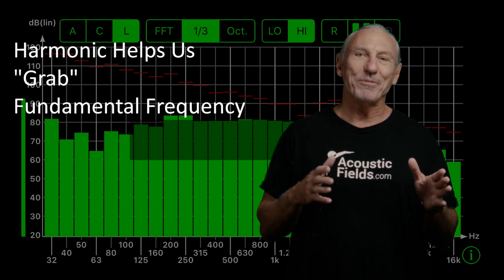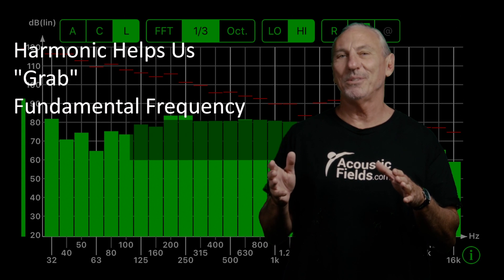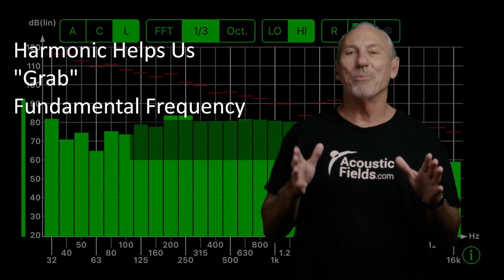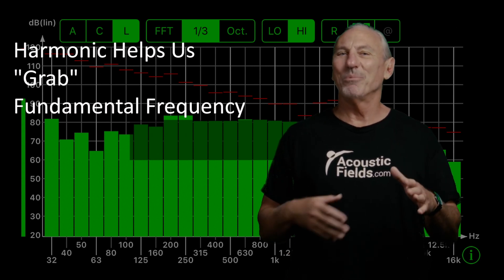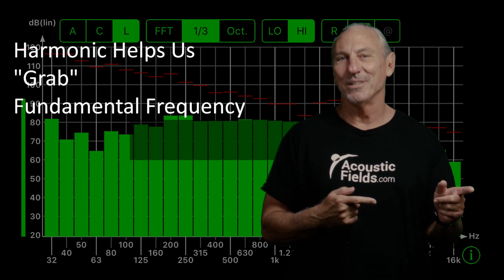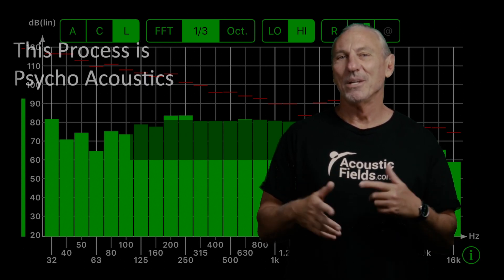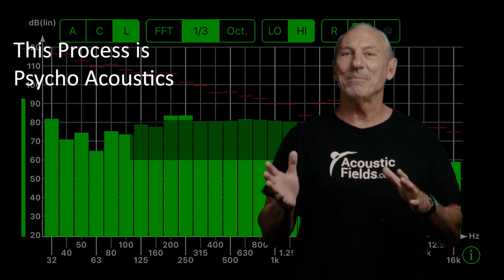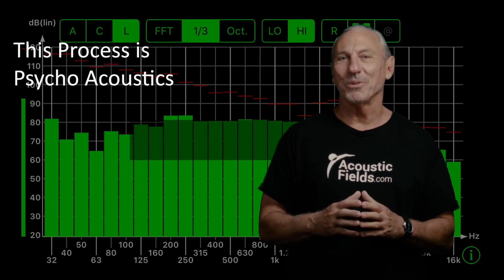So if we have a 50, 100, 150, 200 cycle situation and we're hearing 100, then our brain is kind of psychologically filling in the 50 cycle fundamental. So it's this kind of cat and mouse game our brain plays with the audio signal.